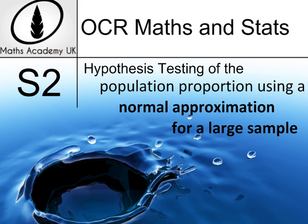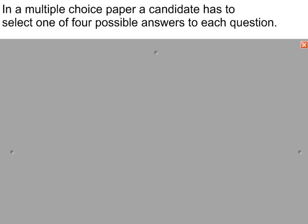Hypothesis testing of the population proportion using a normal approximation for a large sample. In a multiple choice paper, a candidate has to select one of four possible answers to each question. So the probability of just guessing the answer would be one chance in four or a quarter.